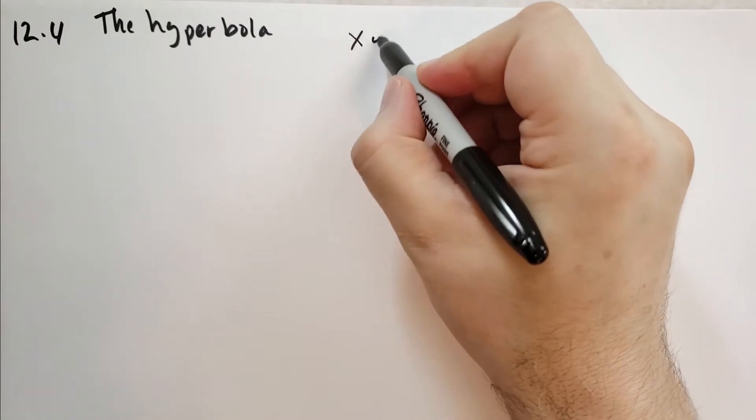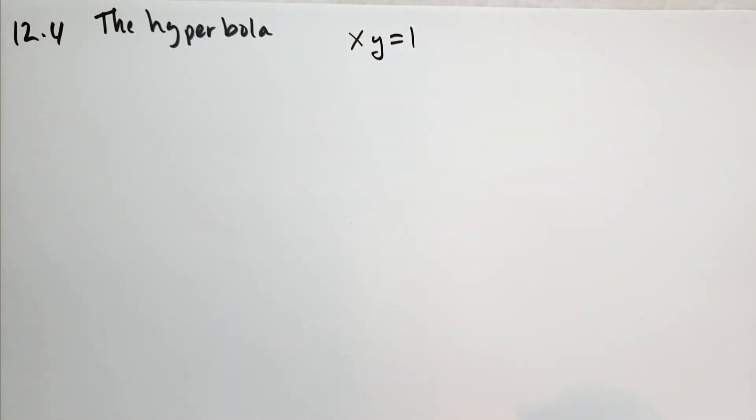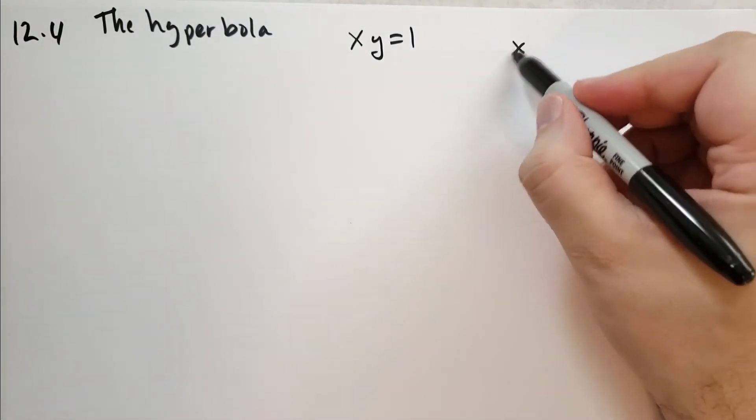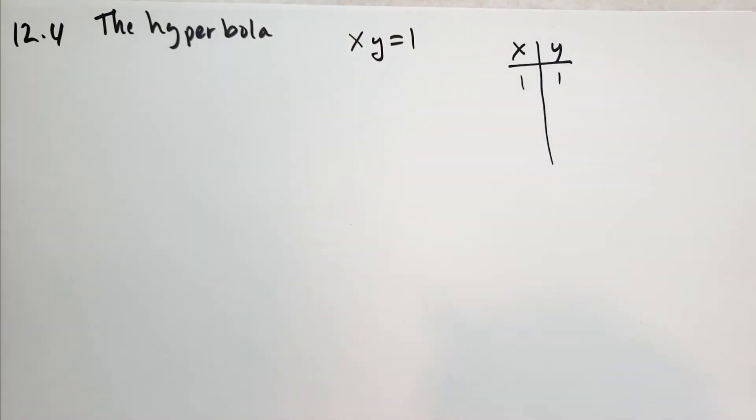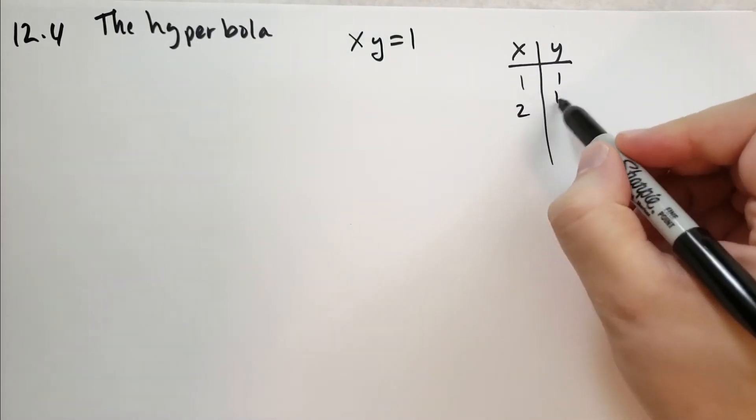So the hyperbola comes from equations that look like this: xy equals 1. And so if you were to draw a table of which values satisfy this equation, you would have x and y: 1 which solves it, 2 and 1 half, 3 and 1 third.